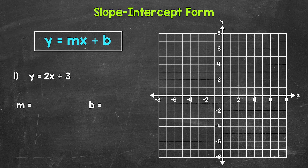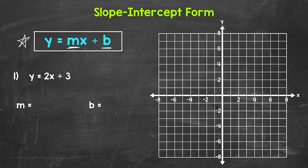Remember, slope-intercept form is a way to write the equation of a line, so we can write and graph equations of lines using this form. We have slope-intercept form right here: y equals mx plus b, with m being the slope and b being the y-intercept. Slope measures the steepness of a line, and the y-intercept is where the line crosses the y-axis. The slope and y-intercept give us all the information we need to graph a line.